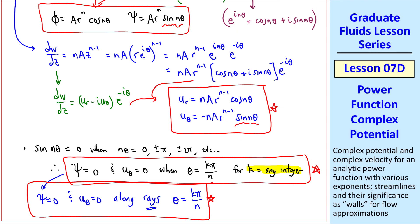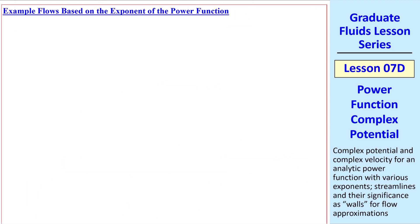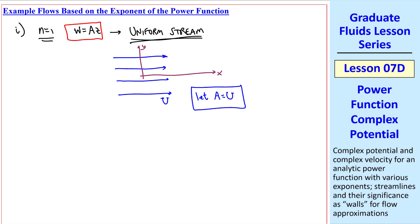The type of flow will depend on this exponent n. Here are some example flows based on the exponent. Let's set n equal 1, then w equal az, which we should recognize as a uniform stream in the x direction. Specifically for speed u, we let a equal u, and we have our uniform stream. In all these cases, we'll look at the psi equals 0 rays, recalling that psi equals 0 and u_theta equals 0 along rays where theta is k pi over n, where k is any integer. Here, for n equal 1, the rays occur when theta is k pi.